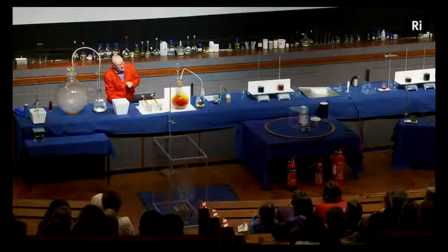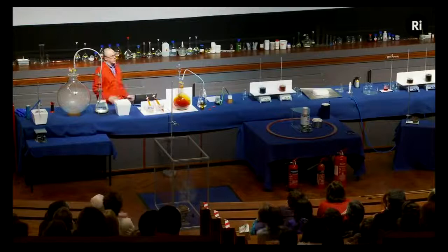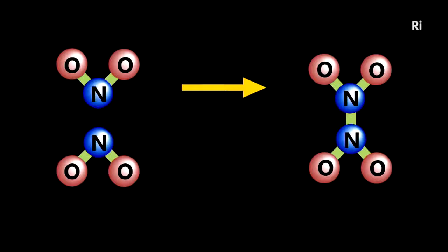Let's have a look at the chemistry going on inside those tubes. Nitrogen dioxide has a molecule which consists of one atom of nitrogen and two atoms of oxygen. If we have two molecules of nitrogen dioxide they can react together to form one molecule of another oxide of nitrogen called dinitrogen tetraoxide. That process releases energy — when that extra nitrogen-nitrogen bond is formed it gives out energy. So that's like the ball rolling downhill: it drives the nitrogen dioxide to come together and form dinitrogen tetraoxide.